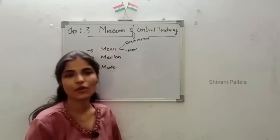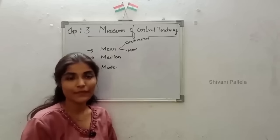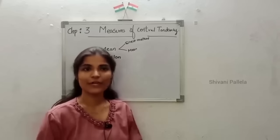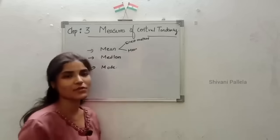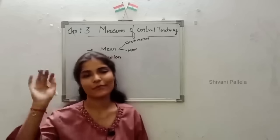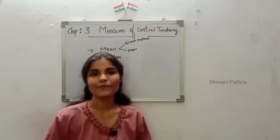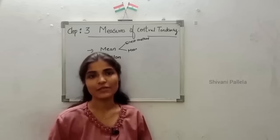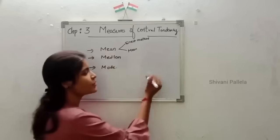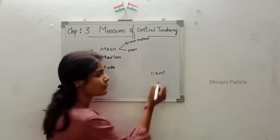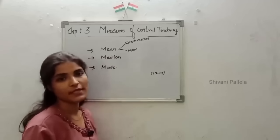Chapter 3 - Measures of Central Tendency - which you are having in Business Statistics 1, Semester 3. Good news: I have completed the whole syllabus of Business Statistics 1. Explanation videos for 2nd, 3rd, 4th, and 5th chapters are available in our channel. In this video I am going to discuss about the 3rd unit, where you can definitely score 12 marks in Part B. In this unit, no theory questions will be asked - only problems.